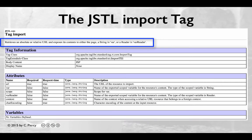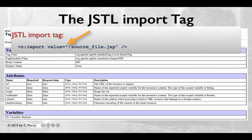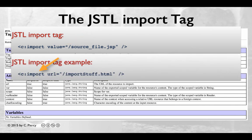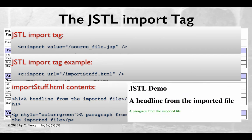The JSTL core import tag can be used to retrieve values from an absolute or a relative URL and expose those contents to the page in a variable or in a reader. A commonly used format is to use the value attribute to indicate the source file to be imported. For this example, assume that we have a JSP with this core import tag importing whatever is stored in importstuff.html into the current JSP. The contents of importstuff.html are a simple headline and a simple paragraph. When index.jsp is implemented, it will actually import those tags and print them at that location. This provides a nice mechanism for separating some content that might be displayed in various areas.